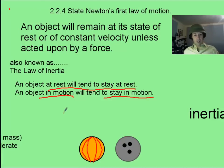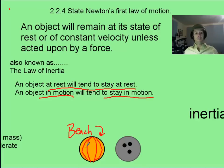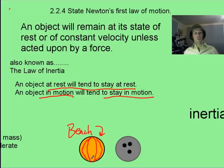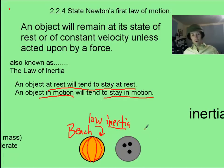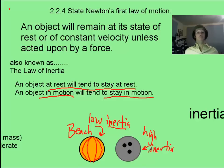Let's take the example of a beach ball and a bowling ball on a nearly frictionless surface, like a bowling alley. If you go up and kick the beach ball, it's going to go into motion quite easily because it has low inertia. It is easy to make it leave a state of rest.